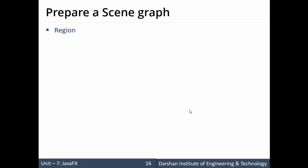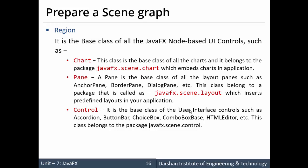The second type of node can be a Region. Region consists of three UI components: Chart, Pane, or Control. A Chart is a bar chart or pie chart and belongs to the package javafx.scene.chart, which needs to be imported to add a chart as part of Region to the scene graph.